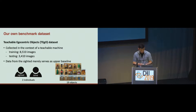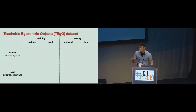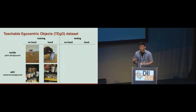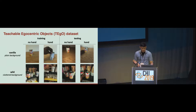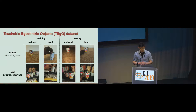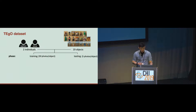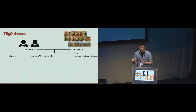In our dataset, we have two different backgrounds: one is vanilla, indicating a plain background, and another is wild, representing a cluttered background. In each phase of training and testing, we have images without hand and with hand respectively. In training, each individual collected 30 photos per object continuously, because a user may collect 30 photos in a row rather than taking 30 different photos at different times.